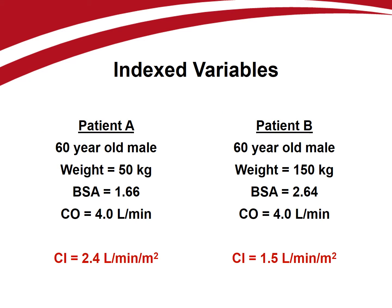Consider two patients, A and B. Patient B weighs three times that of patient A, so their body surface areas are very different. However, both have a cardiac output of four liters per minute. When we calculate each patient's cardiac index, taking into consideration each patient's weight, we see that patient B has grossly inadequate cardiac blood flow compared to patient A. For each hemodynamic parameter, it is important to know its normal range so you can identify when hemodynamic function is abnormal. Because of differences in patient size, there are no normal ranges for non-indexed variables.